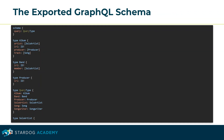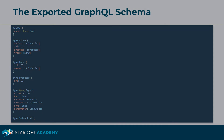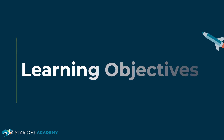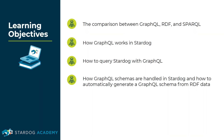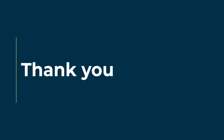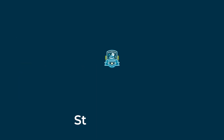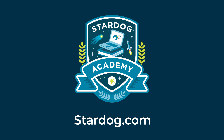This concludes the section on GraphQL schemas. In this training session, you learned the comparison between GraphQL, RDF, and SPARQL, how GraphQL works in Stardog, how to query Stardog with GraphQL, how GraphQL schemas are handled in Stardog, and how to automatically generate a GraphQL schema from RDF data. Thanks for following along. If you have any questions, please review our Frequently Asked Questions page, or head to Stardog.com/docs for additional information.